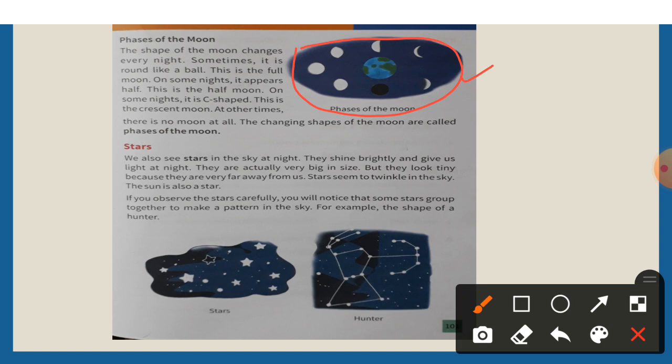Sometimes it is round like a ball. This is the full moon. Full moon means purnima.